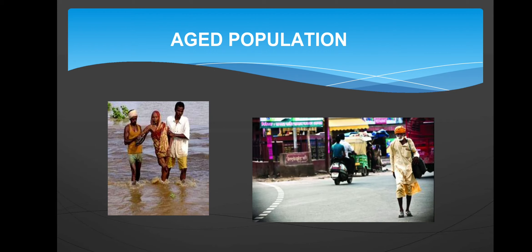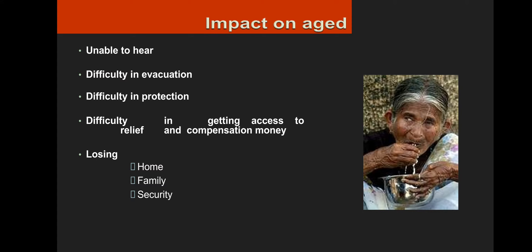Next is aged population. Natural aging processes such as impaired balance — that is, balance disorder — poor decreased strength, poor exercise tolerance, and deterioration of sight, hearing, smell, taste and touch are the most significant impacts for aged populations. Additionally, aged people are unable to hear danger signals or alarms, face difficulty in evacuation, difficulty in protection, difficulty in getting access to relief and compensation money, difficulty in locating avenues of escape, and have to face the shock of losing all they had attained in life — their home, family, and security.